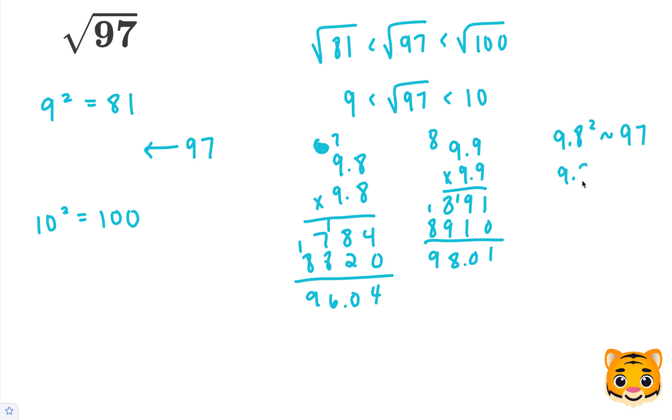9.8 gives us approximately the square root of 97. And this is our tenths place approximation.